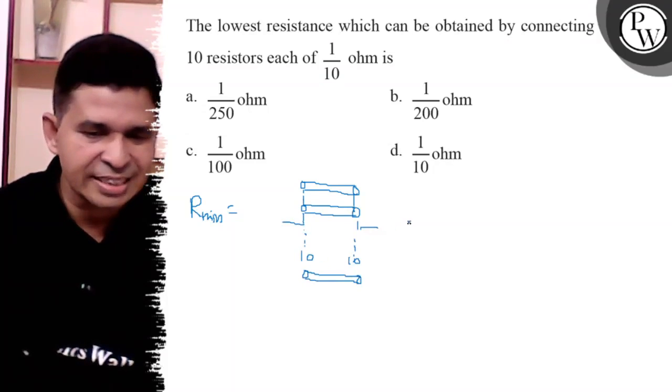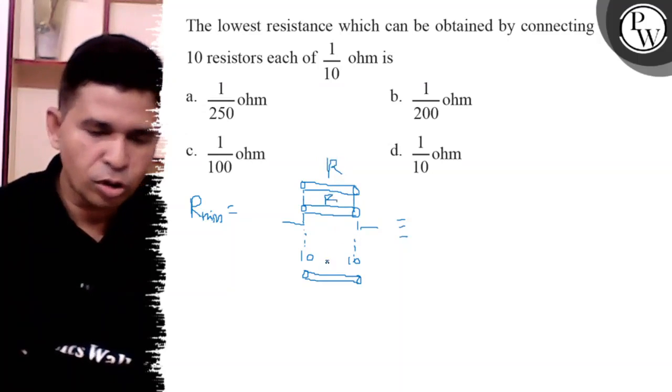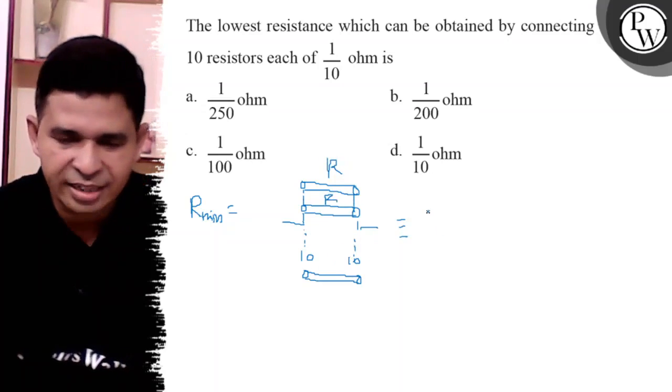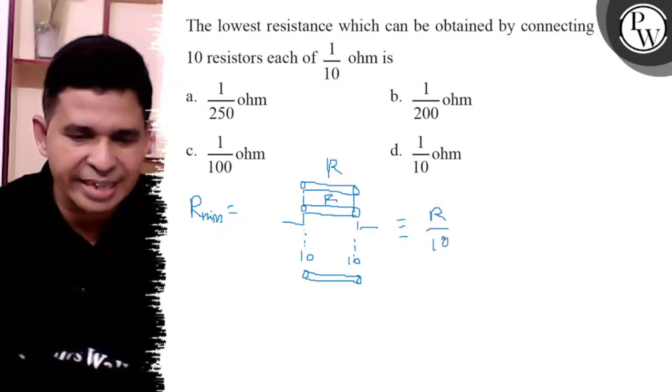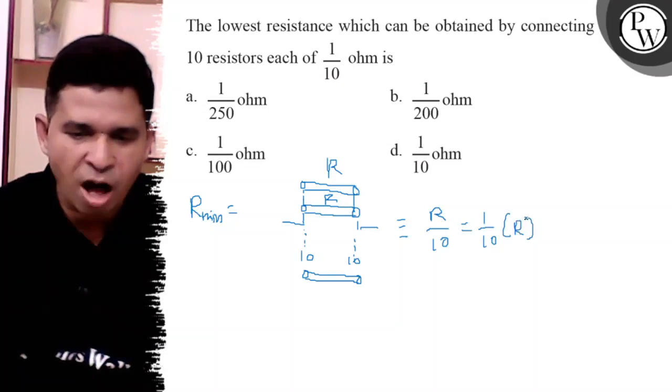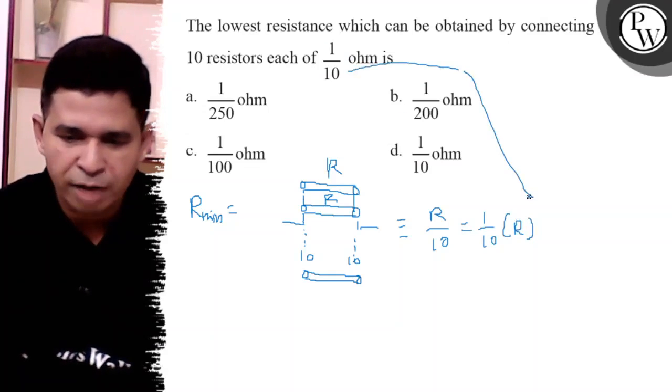Equivalent resistance is, if each have the value R, so 10 resistances are connected and it is R by 10. And it is 1 by 10 into R. In place of R we can place the 1 by 10.